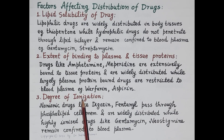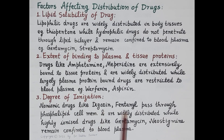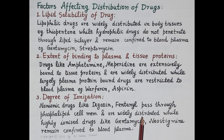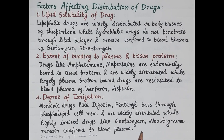The third important factor is ionization. Non-ionized drugs are lipid soluble and easily cross cell membranes, reaching extravascular tissues. Ionized drugs are water soluble and do not cross cell membranes, remaining within the plasma. Non-ionic drugs like digoxin and fentanyl pass through the phospholipid cell membrane and are widely distributed in extravascular tissues, while highly ionized drugs like gentamicin and neostigmine remain confined to the blood plasma.